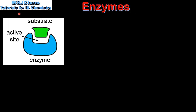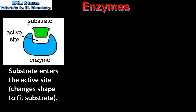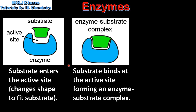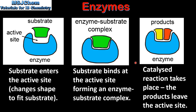Next we look at the action of an enzyme. In this diagram we have the substrate, which is the reactant molecule, and we have the enzyme. The part of the enzyme that reacts with the substrate is called the active site. First, the substrate enters the active site, which changes shape to fit the substrate. Next, the substrate binds at the active site, forming an enzyme-substrate complex. And finally, the catalyzed reaction takes place and the products leave the active site. The active site then returns to its original shape, ready to bind with another substrate molecule.